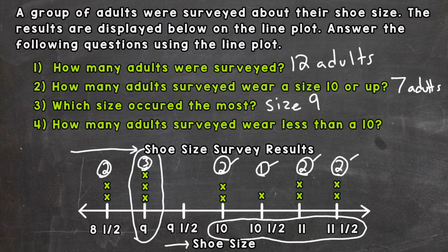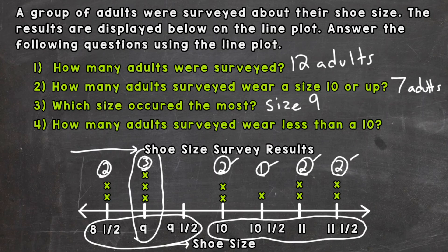Number four: how many adults surveyed were less than size ten? That does not include size ten, since we want strictly less than. Looking at that portion of the line plot: two people for size eight and a half and three people for size nine, for a total of five adults less than a size ten.